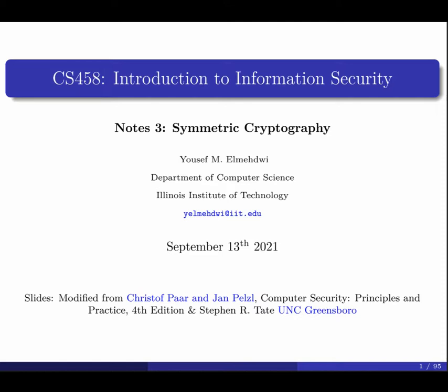For a block cipher, we perform operations on blocks of data — requiring a specific amount of data, for example 128 bits or 256 bits, as a unit for encryption or decryption. For a stream cipher, we process input elements continuously, producing output one element at a time. We don't require a fixed block of stored data before performing the operation.